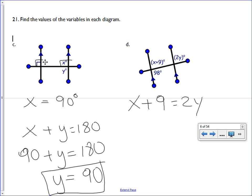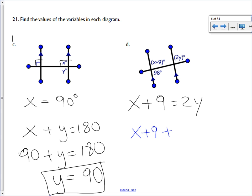What I want to use first is I want to use the fact that the angle that has a measurement of X plus 9 added to the 98 degree angle, those two together sum up to 180 degrees. So now I can solve for X. So that's X plus 107 equals 180. I'll subtract 107 from both sides. You get what for X?